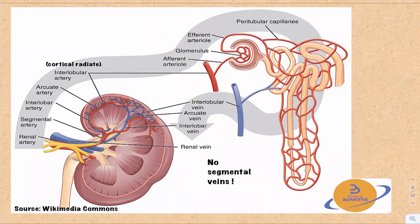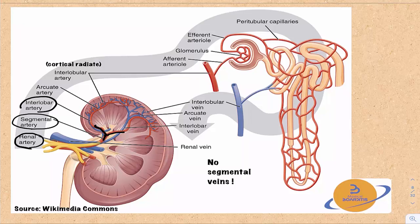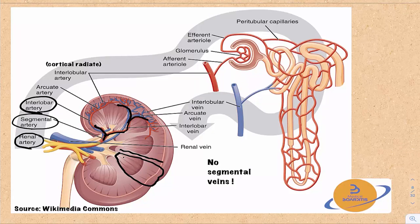To review the blood supply: the renal artery gives off segmental arteries, which give off interlobar arteries — called interlobar because they run between the renal lobes (each being a renal pyramid and its overlying cortex). The interlobar arteries give off arcuate arteries — named arcuate because of their curved course. The arcuate arteries then give off cortical radiate arteries, also called interlobular arteries.